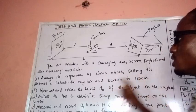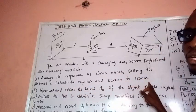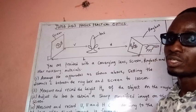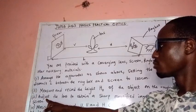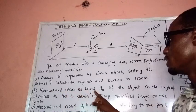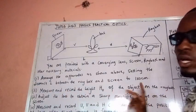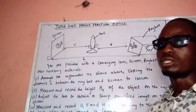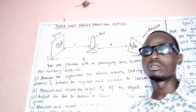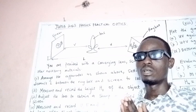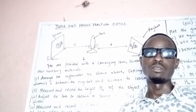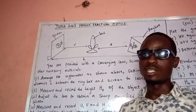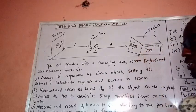Arrange the apparatus as shown, setting the distance L between the ray box and screen to 100 centimeters. So the distance between the screen and the object is 100 cm. The next step is to measure and record the height h-naught of the object on the ray box. We're meant to measure the height of the illuminating object we are using. We may not be able to measure the height perfectly, but it won't greatly affect us since we may not need those values to plot the graphs.